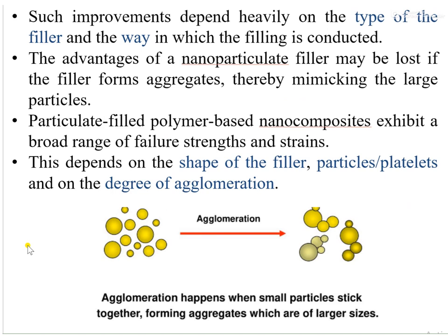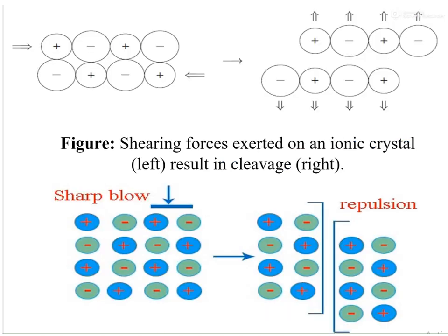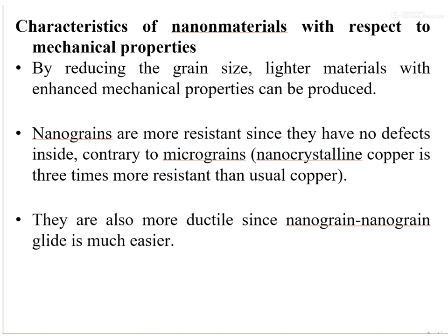The type of fillers and the way in which fillers are incorporated into a polymer are very important. Aggregation is another phenomenon that can reduce the mechanical properties of materials. The shape of the filler, whether particles or platelets, and the degree of aggregation are important factors for modifying mechanical properties. When shearing forces are exerted on ionic crystals, they can cause cleavage and sliding of crystal planes.